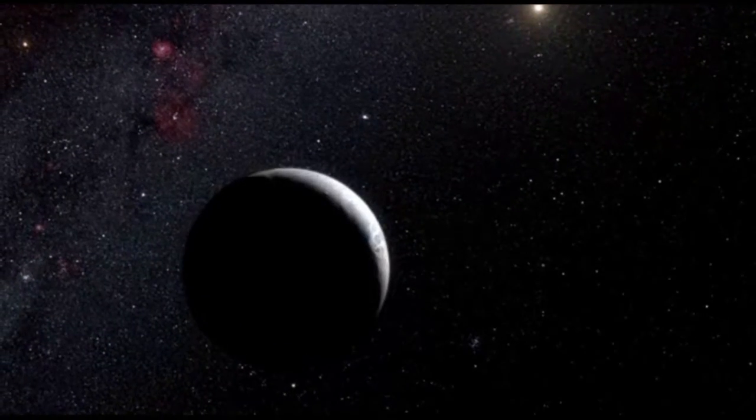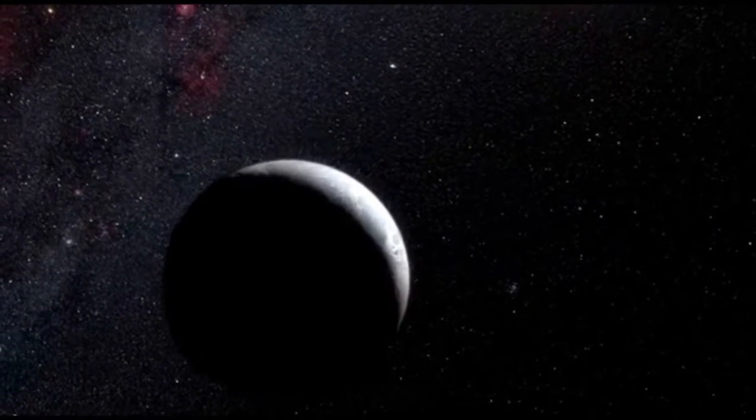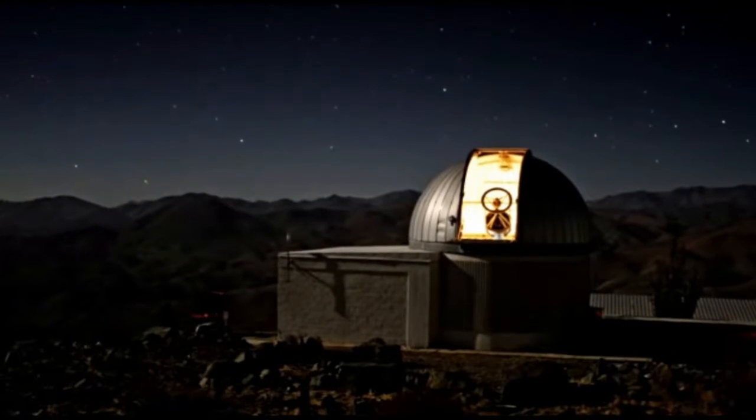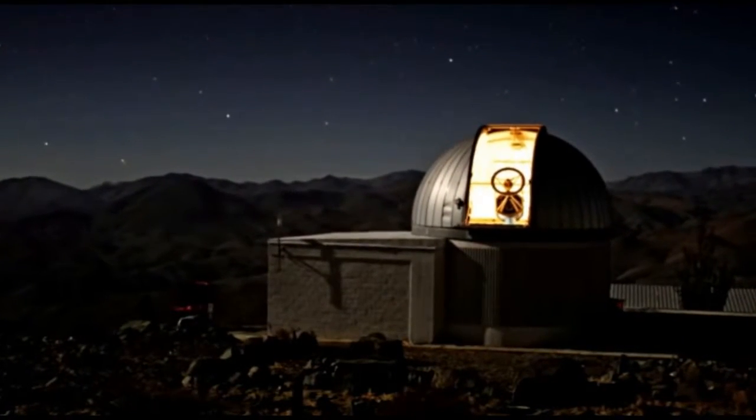Astronomers have accurately measured the size of the remote dwarf planet Eris for the first time. They caught it as it passed in front of a faint star, using the Belgian TRAPPIST telescope at ESO's La Silla Observatory, along with two other telescopes in Chile.